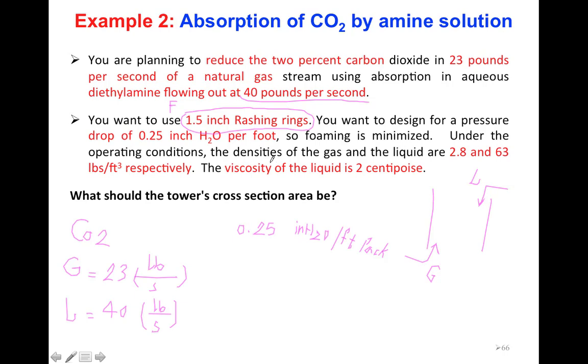Under the operating condition, the density of the gas and liquids are given. Density of gas ρg is 2.8, density of liquid ρl is 63 pounds per cubic foot. The viscosity is also given, which is 2 centipoise. What's the cross-sectional area or diameter to be used?